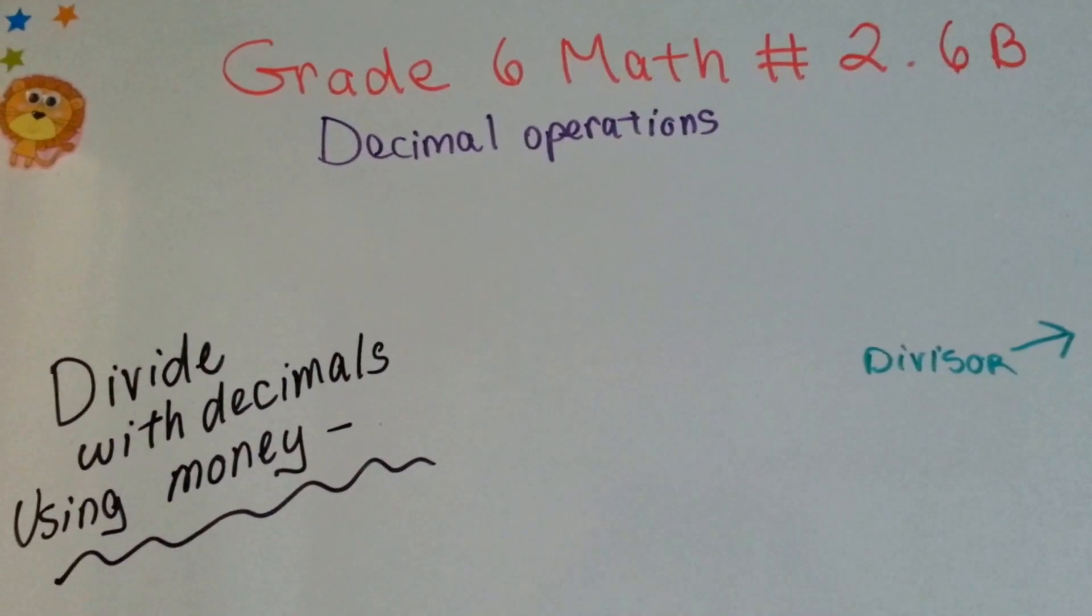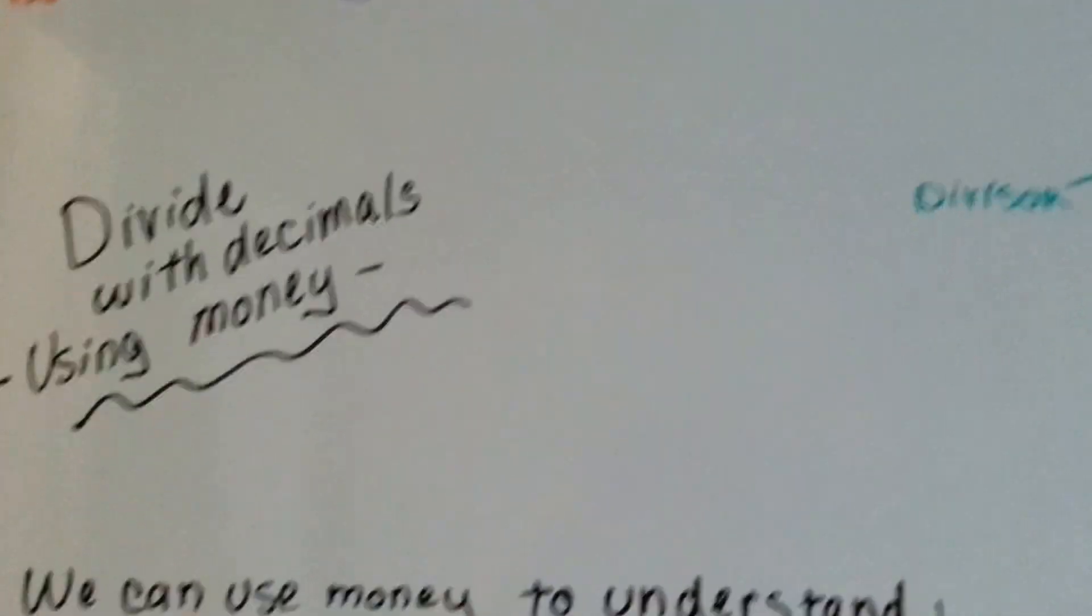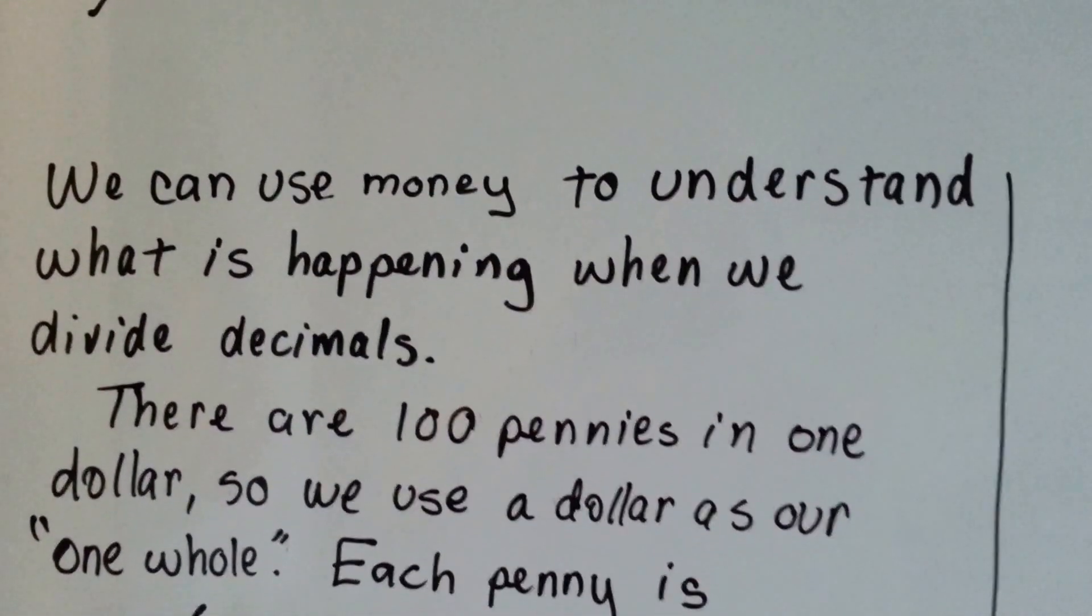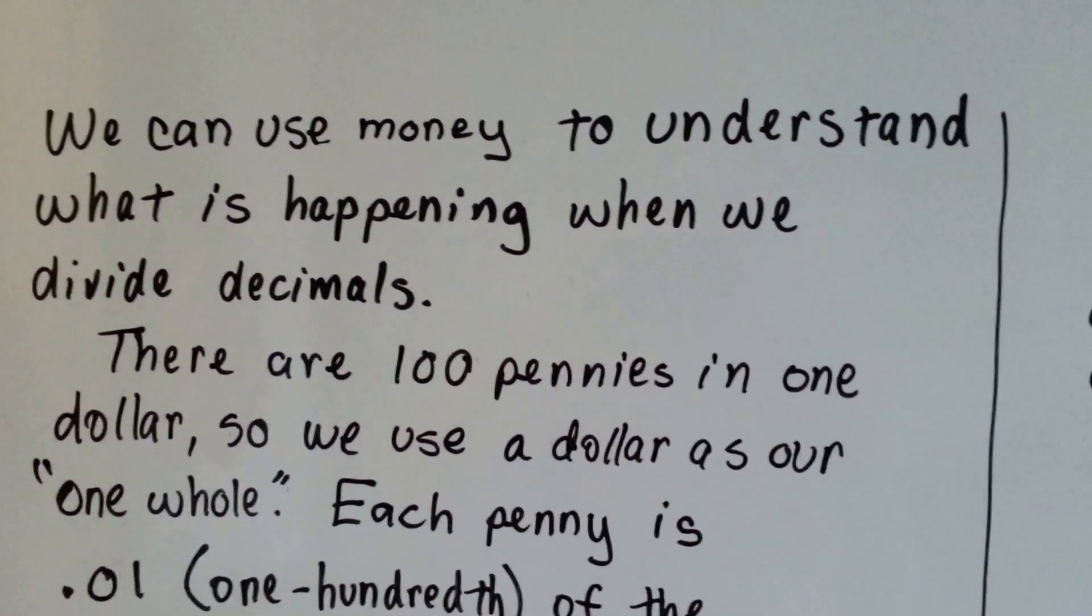Sixth grade math number 2.6b: Divide with decimals using money.